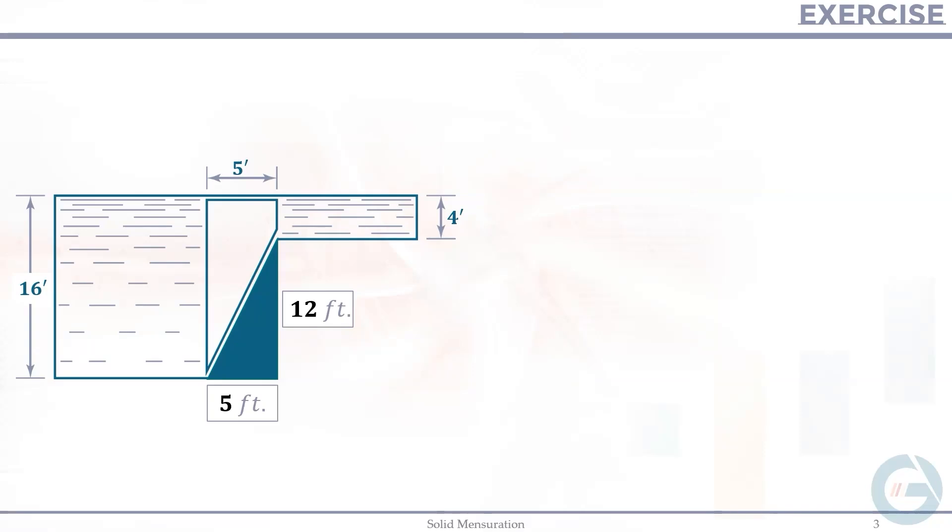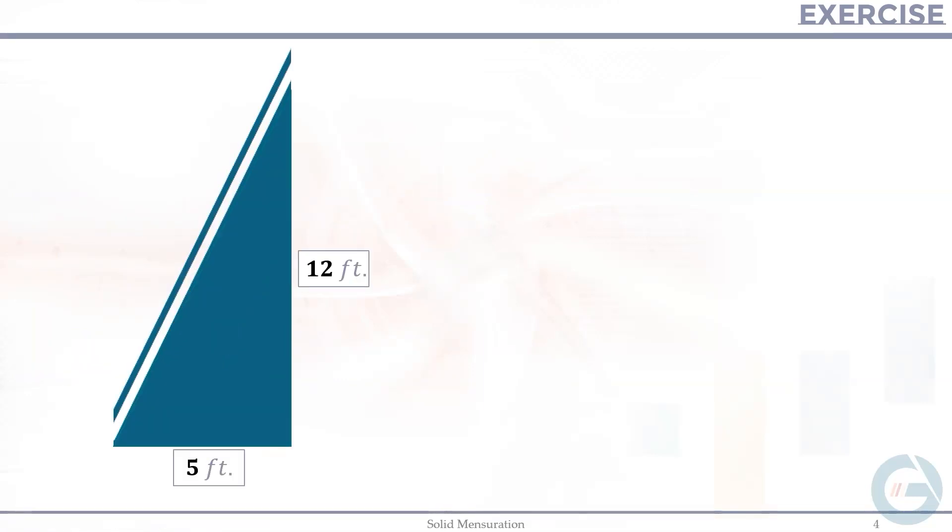So we have now our triangle, and we can calculate now for the length. So let's focus on this area only. Since we are after the volume of this pipe, let's calculate now the length. Let's label this as E, for the lateral edge, for the slant height.